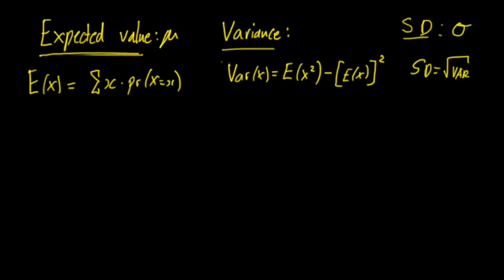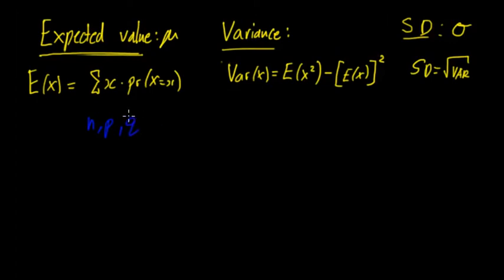However, with the binomial distribution there is a quicker way to calculate, which is very useful. So if you remember with the binomial you have n, p, and q. P is the probability of the successful outcome, n equals the number of trials, and q equals the probability of anything that's not p — it's also 1 minus p. So the expected value of X is equal to n times p.